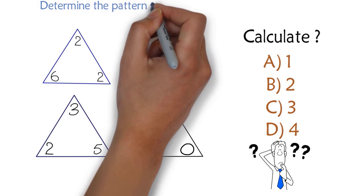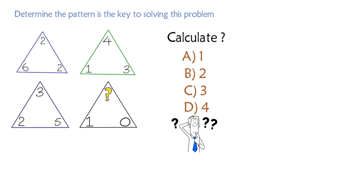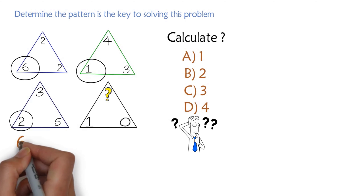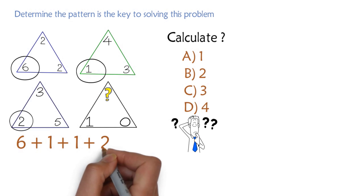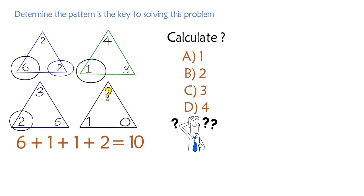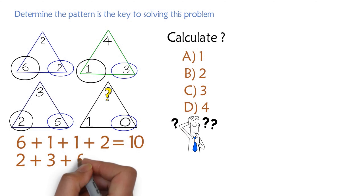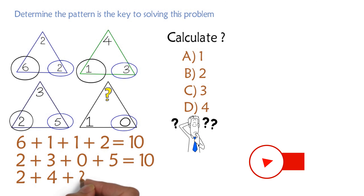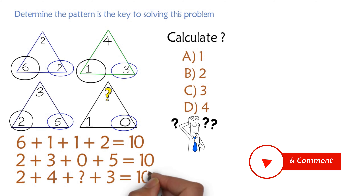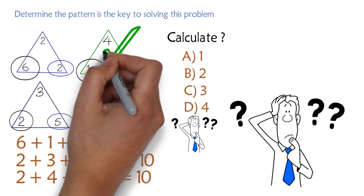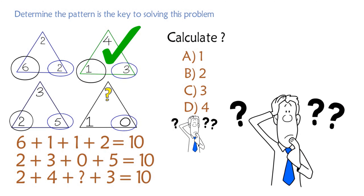Determining the pattern is the key to solving this challenge. If you add up the numbers in the lower left corners — six plus one plus one plus two across all triangles — you get a sum of ten. The same thing happens when you add up the numbers in the bottom right corners: two plus three plus zero plus five also equals ten. So the same logic can be applied to the upper right corners. Note that the triangles are colored to confuse you, so you might focus only on individual triangles instead of looking across multiple triangles.